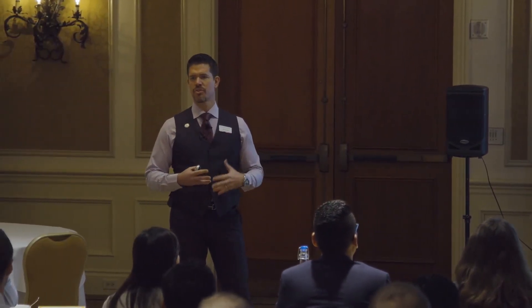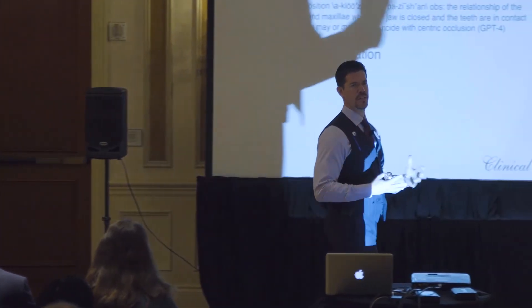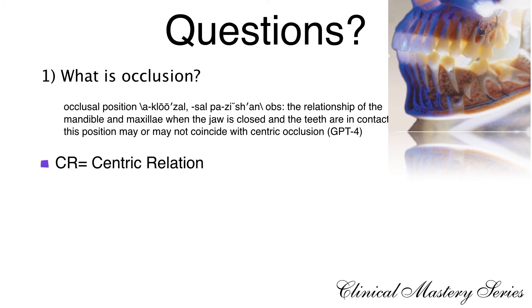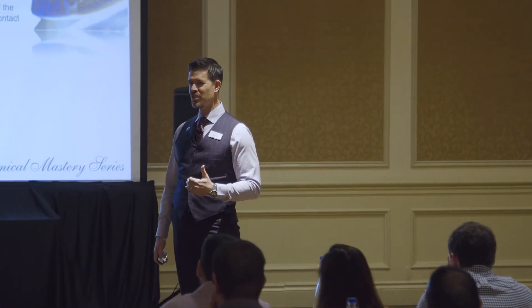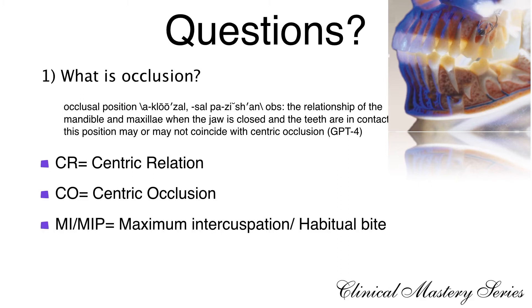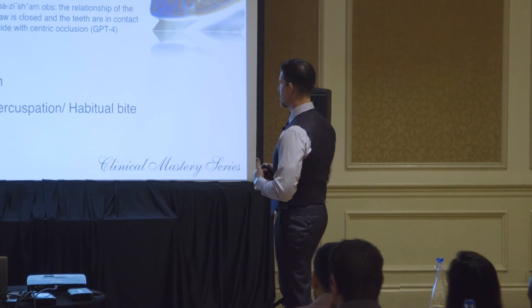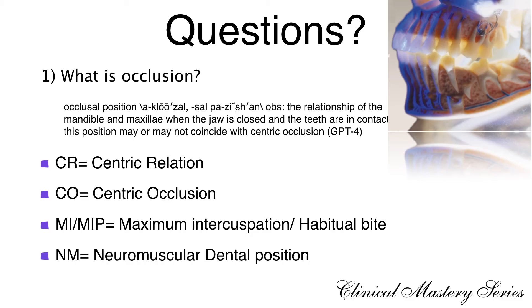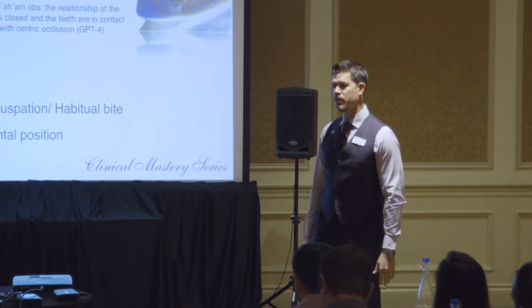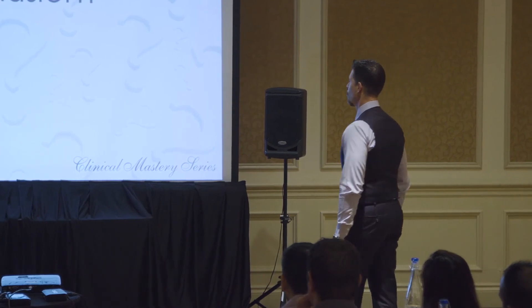This weekend we're going to talk about several terms and initials — not to confuse you, but because this is what exists in dentistry. When we use the term CR, that references centric relation. CO — which I feel is the most misused term in dentistry — stands for centric occlusion. We also have MI, MIP, or habitual bite, which stands for maximum intercuspation. And lastly, NM or neuromuscular dental position, because that is sometimes viable. Those are the terminologies you'll hear consistently throughout this weekend.